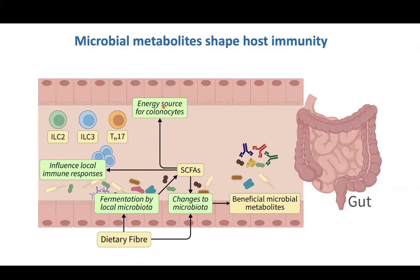Short-chain fatty acids, such as butyrate, are key energy sources for colonocytes. They power these cells — it's critical for their function, wound repair, epithelial integrity. They also directly activate immune cells, shaping the environment of the gut. Short-chain fatty acids are generally, in nearly every instance, seen as having health benefits. But this is the tip of the iceberg. There are lots of other metabolites which are having functions, some of which we understand, others we don't yet.